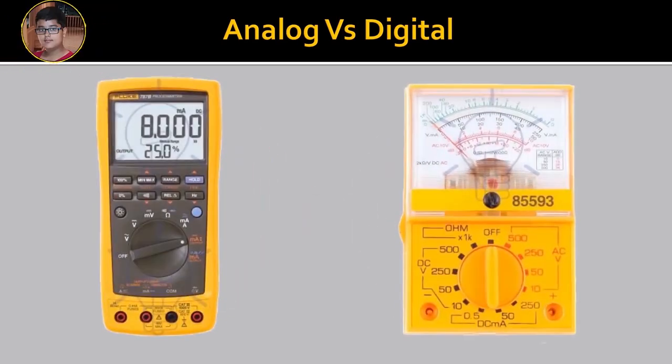Now let's see the difference between Analog and Digital. On the left side, there is Digital Multimeter and on the right side, there is Analog. In the Analog Multimeter, it is very difficult to see the definite value. But in Digital, the Digital processor gives us the value.